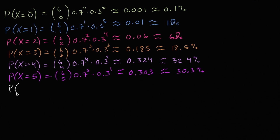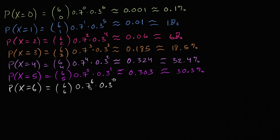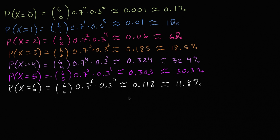So the probability that I make all six is going to be six choose six, times 0.7 to the sixth power, times 0.3 to the zeroth power. Six choose six is one and 0.3 to the zero is one, so it's really just 0.7 to the sixth power, which is approximately 0.118, or 11.8%.